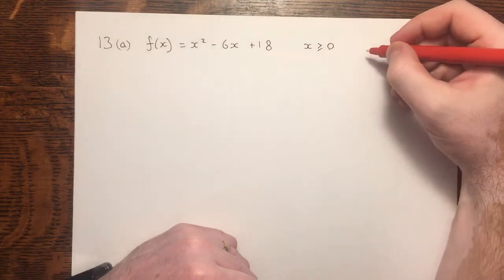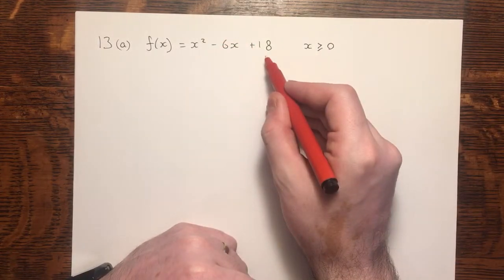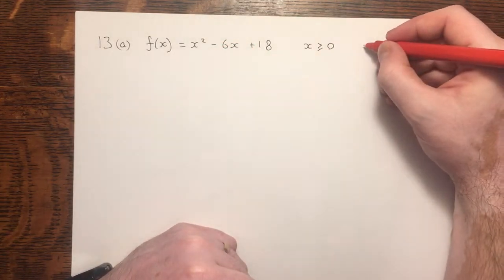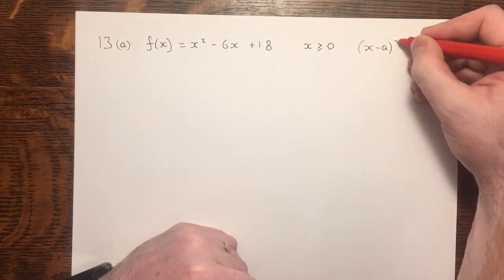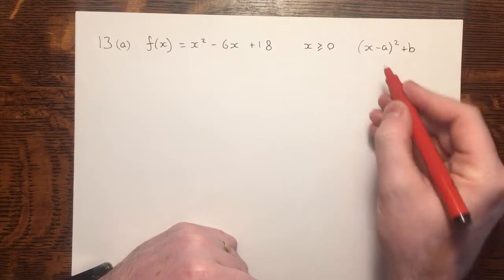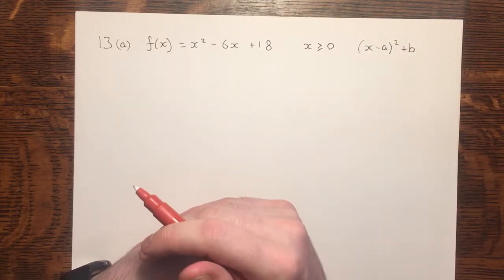So positive. And we're asked to, in part a, take this function and rewrite it in the form shown. Now that's the completed square.